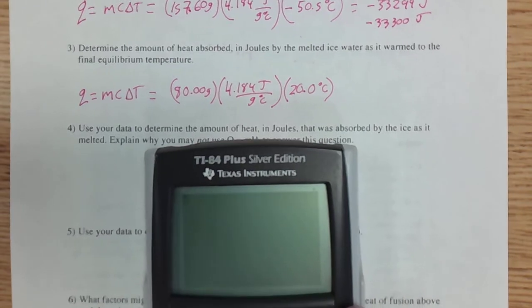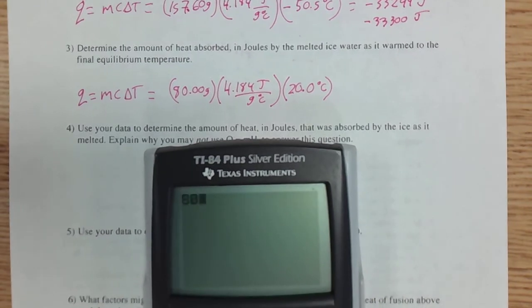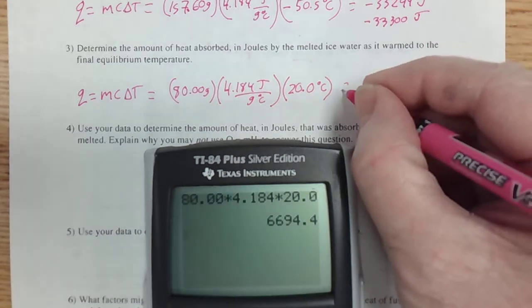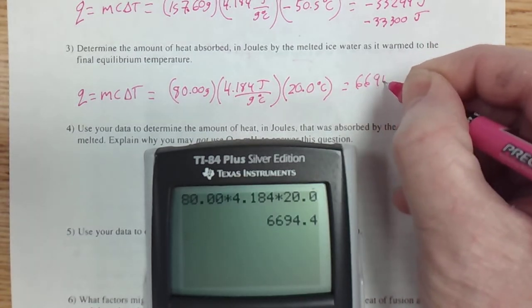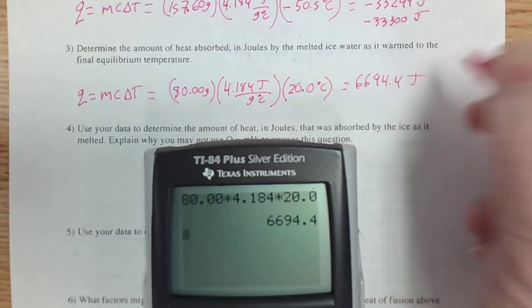So we can run that through a calculator. 80.00 times 4.184 times 20, and that gives us 6,694.4 joules.